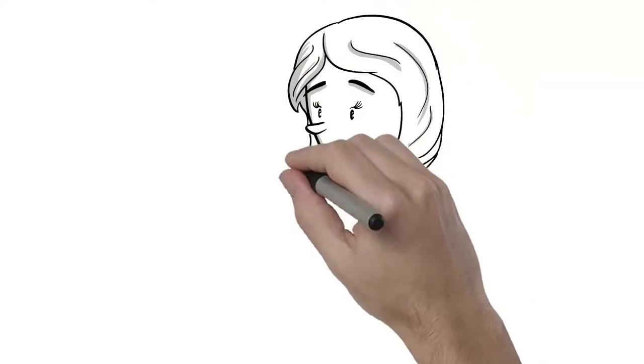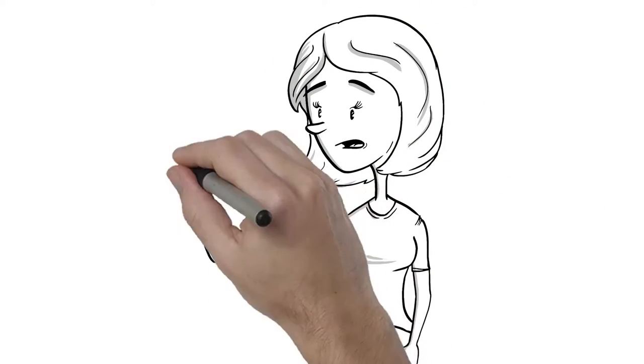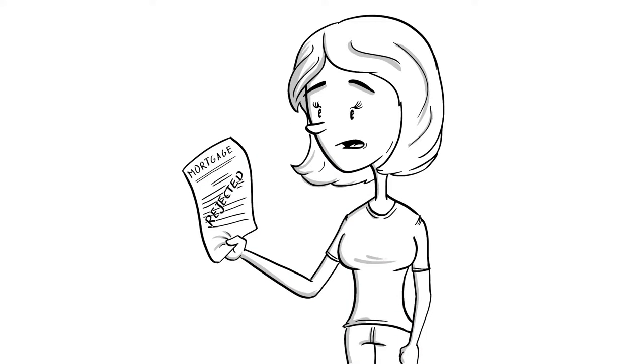Julie is stressed out. She wants to buy a house, but her credit score is too low, and she keeps getting rejected for a mortgage. It's embarrassing.